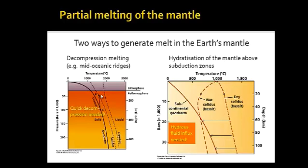That happens under mid-oceanic ridges. The other process is hydration of the mantle above subduction zones, which lowers the solidus from the dry mantle — forming basaltic melt — to the water-saturated solidus. At around 100 kilometers depth, this water-saturated solidus lies considerably below the geotherm, meaning asthenosphere at that depth, at a temperature of perhaps around 1000 degrees, will undergo partial melting due to the influx of hydrous fluids.